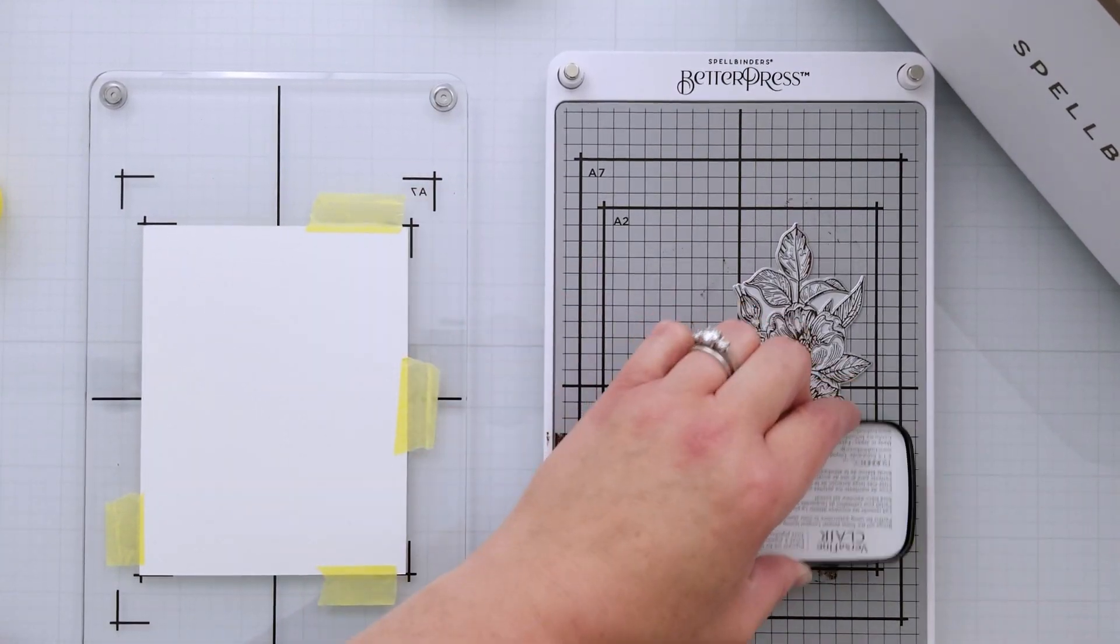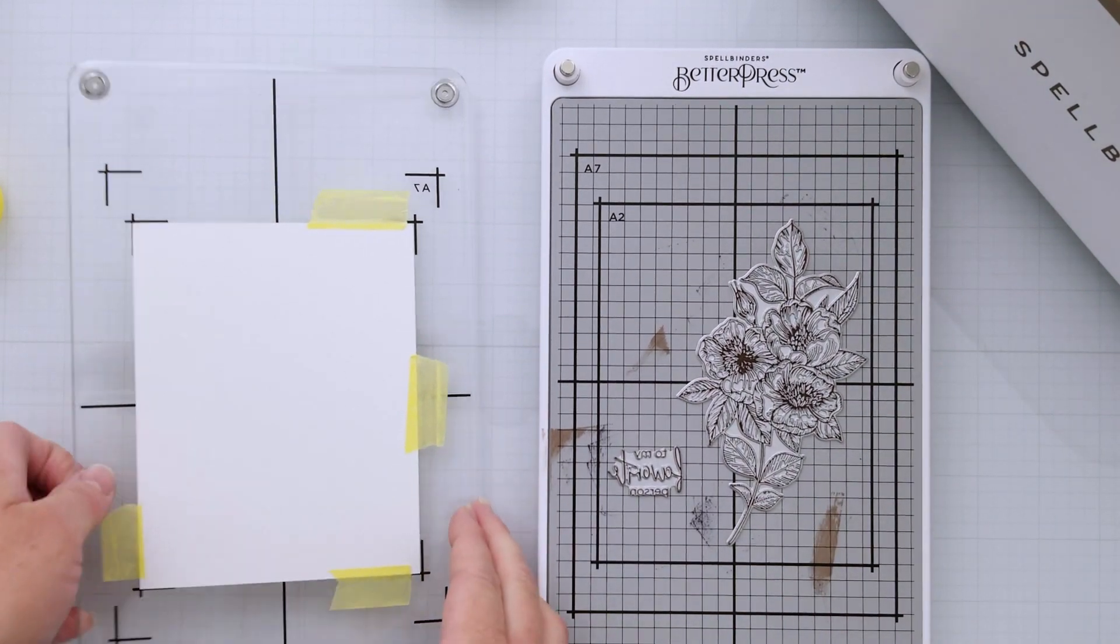Now, I figured while I had my plates out, let's try some other inks. I know that Spellbinders offers advice on which inks to use, and I kind of have to see it to believe it myself. So I pulled out some VersaFine Clair ink. That's a pigment ink that's oil-based, and I thought maybe this will work okay, too. It works beautiful for sentiment stamps. So let's try that and run it through my Spellbinders Platinum and see what happens.